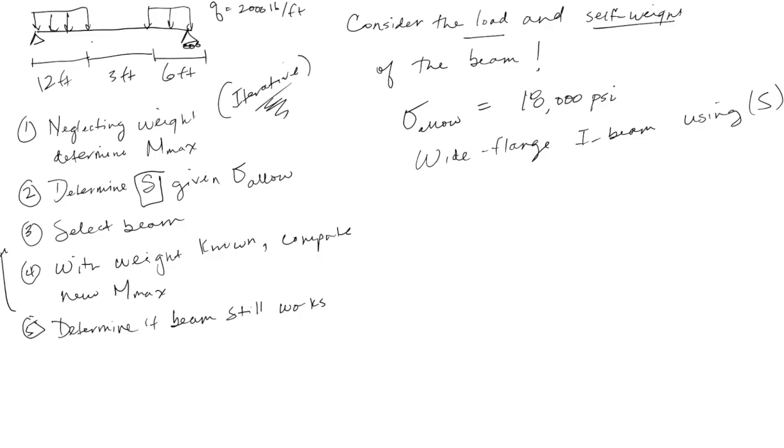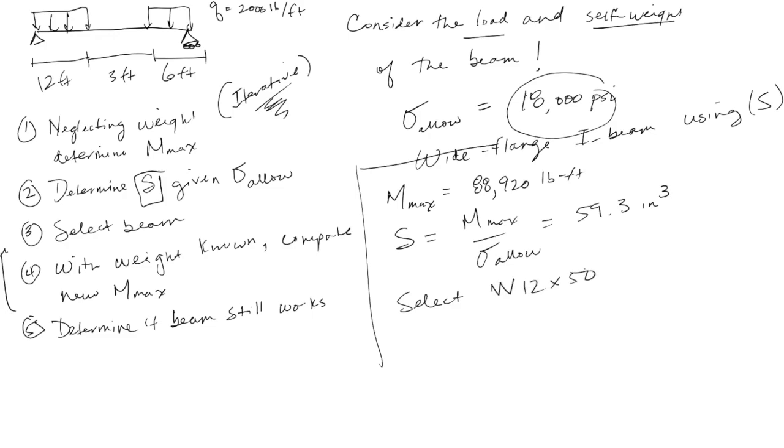So if we look at this particular problem, the first thing we do is we figure out m max. Neglecting weight. And again, I'm not going to do the statics. I'm going to let you guys work on the statics on your own. In this case, m max neglecting the weight is 88,920 pound feet. And so S then is going to be m max over sigma allowable. Sigma allowable is given right here. And so that gives us an S of 59.3 inches cubed. So we'll go in the back of the book and find a wide flanged I beam whose S is at least 59.3. And so that means we select W12×50. Again, we want the minimum weight. You can pick a huge one that will work, but you want to try and find the one that's most efficient.